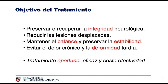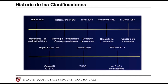Therefore, the goal of treatment must be to preserve or recover neurological integrity, reduce displaced lesions, maintain balance, preserve stability, and avoid chronic pain and late deformity. To accomplish this, we must know how to classify thoracolumbar fractures. Over time, spine fracture classifications have undergone a series of changes in which they take into account precisely these functional and structural aspects.